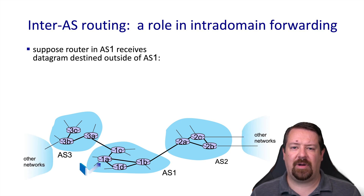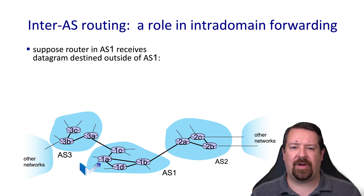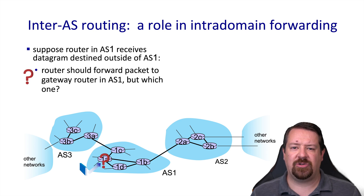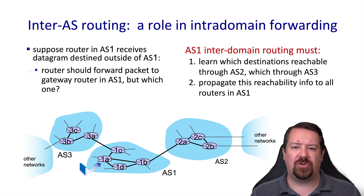Here we have a packet arriving at a router inside AS1 that's headed to a destination in another autonomous system. This router will not know details about destinations in other ASs, but it will have some notion of how to get out of its own AS. The question is which gateway should it use. For that question to be answered, the inter-domain routing protocol must learn about which destinations are available through AS2 and which are available through AS3, and then some aggregation of this information needs to be propagated to the other routers inside AS1.